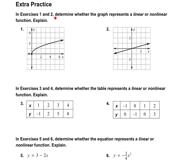In exercises one and two, we need to determine whether the graph represents a linear or nonlinear function and explain. Looking at number one, we can see clearly that this is not a line — it looks like a curve, so this is a nonlinear function. In number two, we can clearly say that this looks like a very straight line, so it is linear.